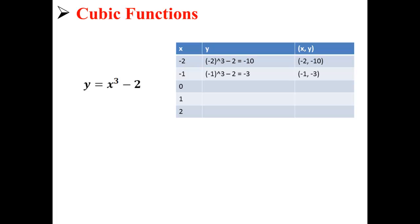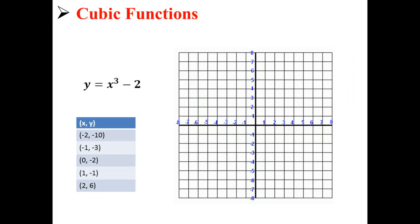We continue this until we have all five points. Our five points are: (-2, -10), (-1, -3), (0, -2), (1, -1), and (2, 6).